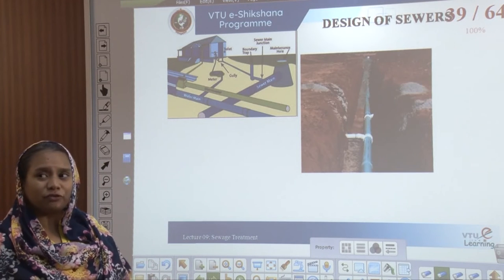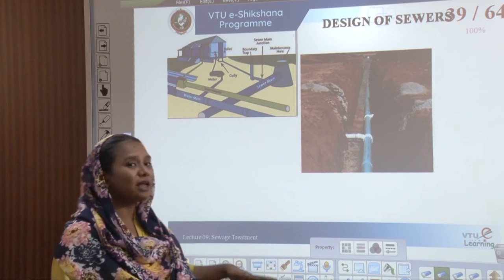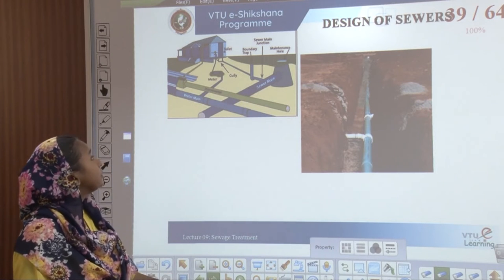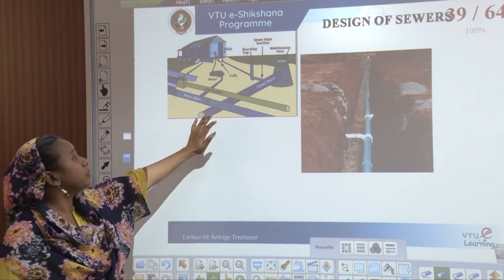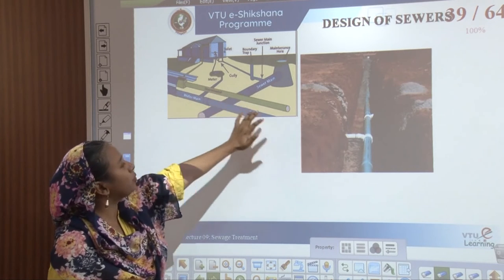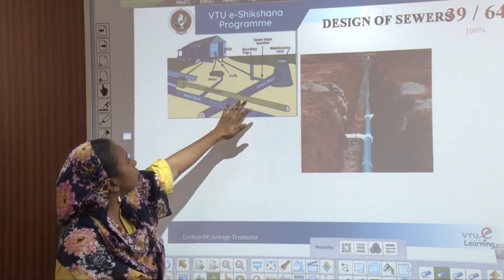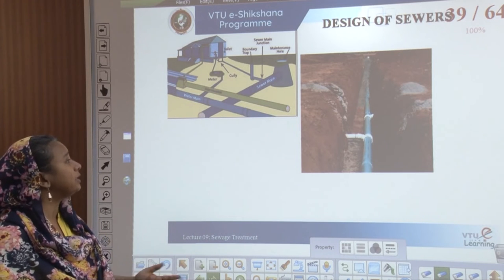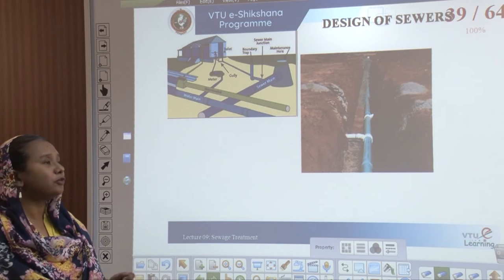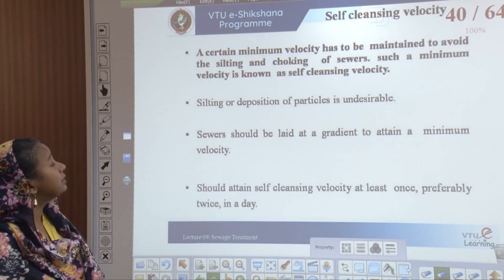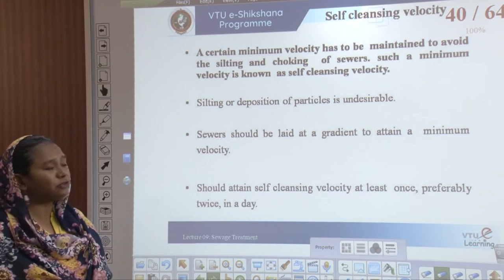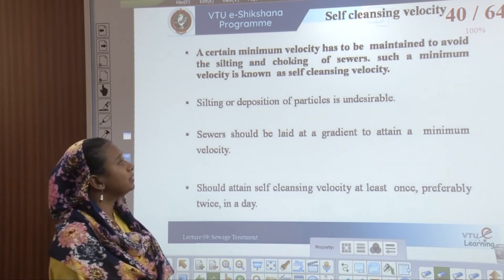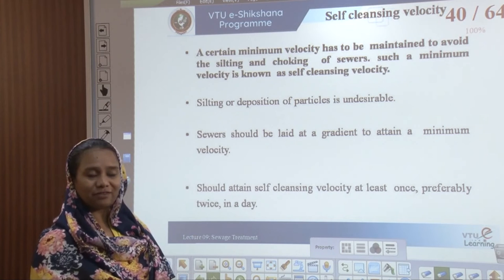Sewers are designed in the same process as water pipelines. There would be a water main, parallel to which would be a stormwater or sewer line moving perpendicular to both. A certain minimum velocity must be maintained — called self-cleansing velocity — to avoid silting and choking of sewers. Sewers should be laid at a gradient to attain this minimum velocity at least once, preferably twice, a day.